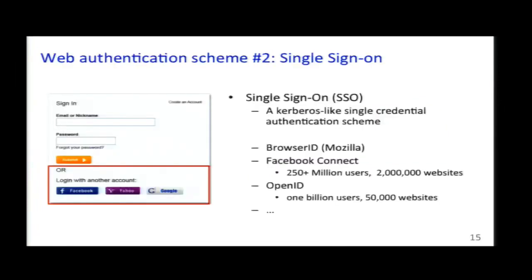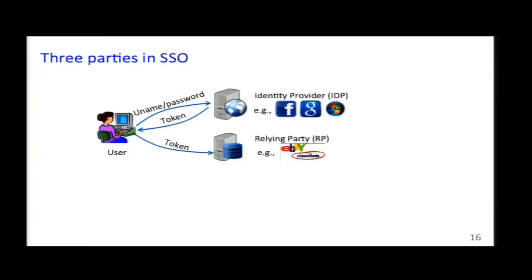The second scheme is single sign-on. Most of you have seen this — you can use your Facebook ID or Google ID to log into a third-party website. It's essentially a single-credential authentication scheme. There are three parties: the user, the identity provider (IDP), and the relying party (RP). The user sends credentials to the IDP and gets a token, then presents that token to the RP, allowing the user to log into that party.